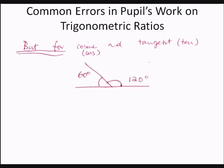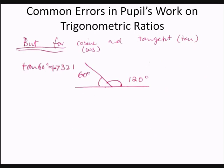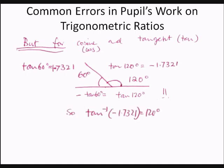For example, the acute angle is 60 degrees and its supplementary angle is 120 degrees. Cosine 60 degrees is 0.5, but cosine 120 degrees is negative 0.5 — the negative of cosine 60 degrees. The inverse cosine of negative 0.5 is 120 degrees only, and the inverse cosine of 0.5 is 60 degrees only. Tangent 60 degrees is 1.7321, while tangent 120 degrees is negative 1.7321. So inverse tangent of negative 1.7321 is 120 degrees, and inverse tangent of 1.7321 is 60 degrees only.